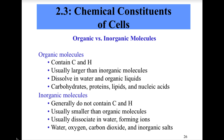As far as chemical constituents of cells, inorganic substances include water, oxygen, carbon dioxide, and inorganic salts. Inorganic substances generally do not contain carbon and hydrogen — though carbon dioxide has a carbon atom and water has hydrogen. They are usually smaller than organic molecules and usually dissociate in water to form ions. An ion is an atom with a net electrical charge: a cation is positively charged and an anion is negatively charged.